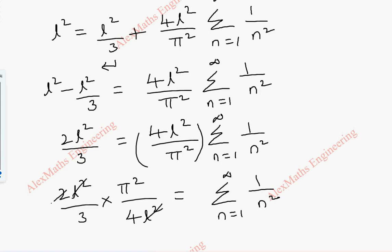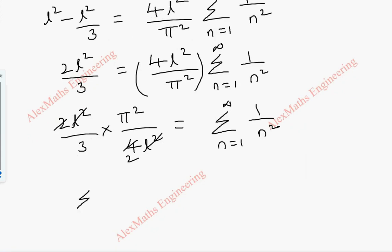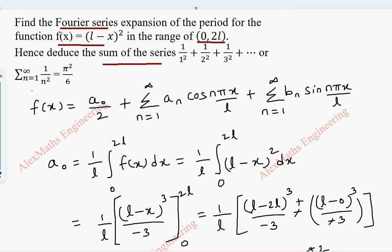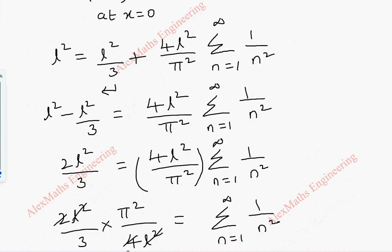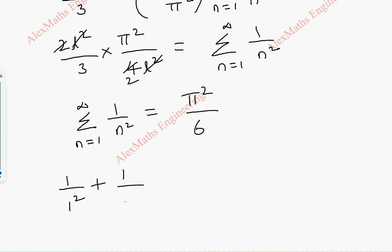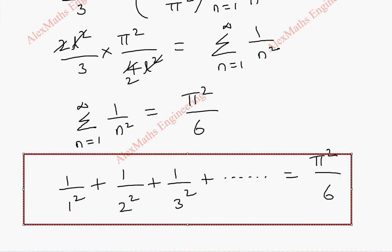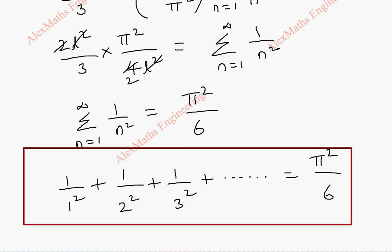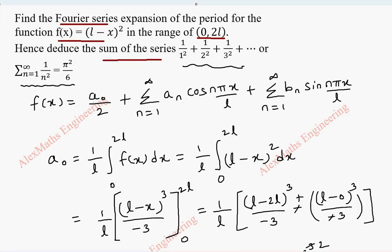So (π²/4L²) × (2L²/3) = summation n=1 to infinity of 1/n². The L² cancels, giving π²/6 = summation n=1 to infinity of 1/n². Expanding the summation: 1/1² + 1/2² + 1/3² + 1/4² + … = π²/6. This is the deduced value of the given series.